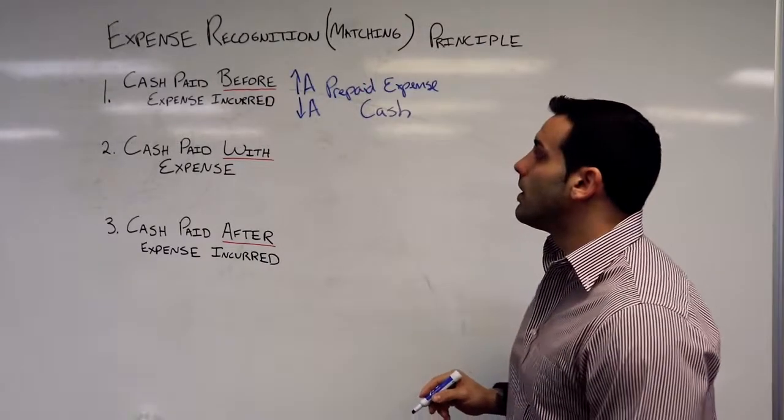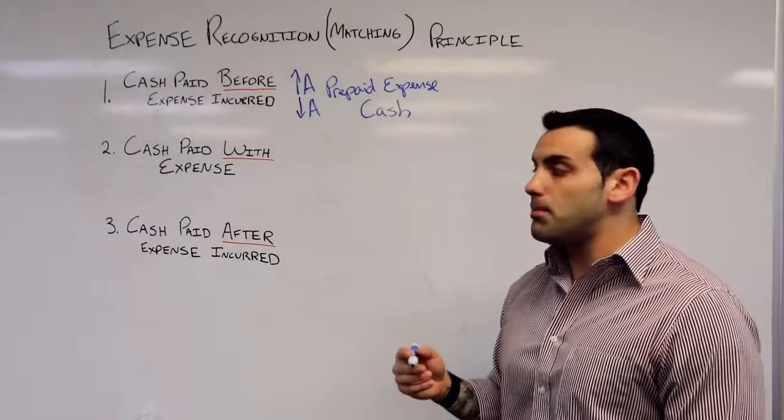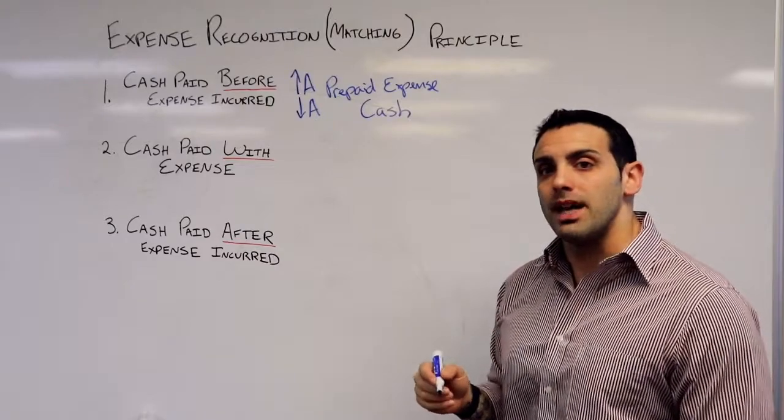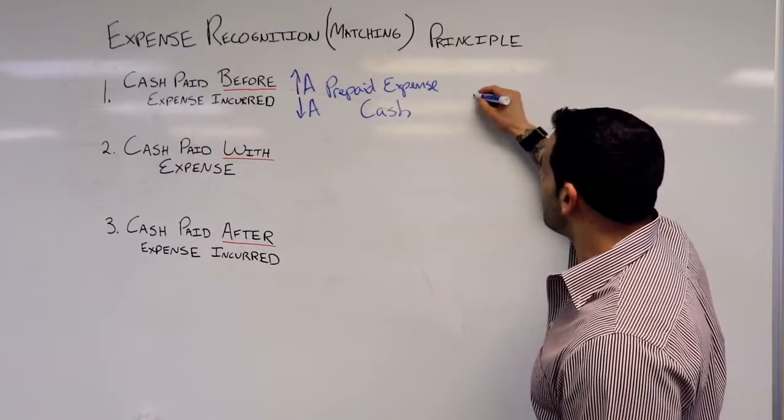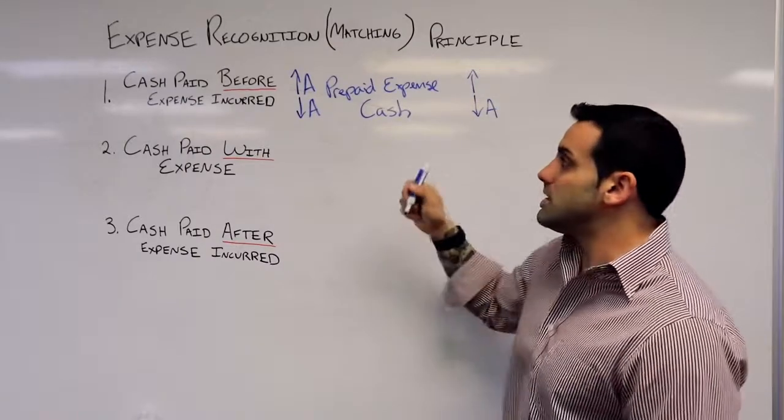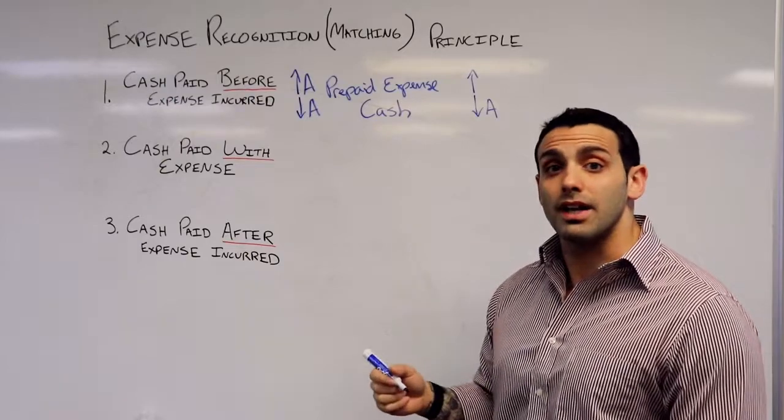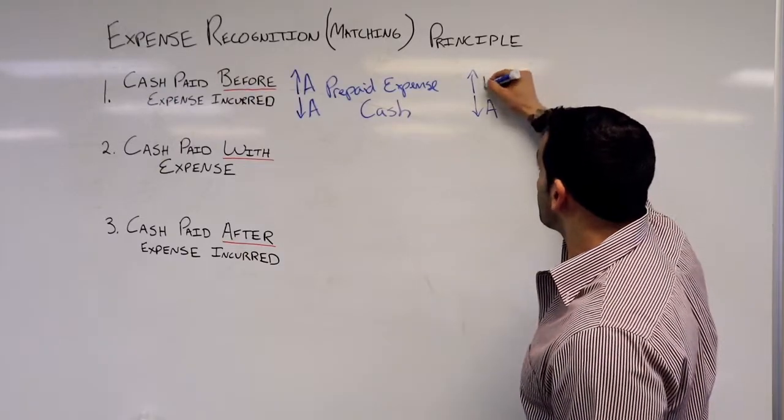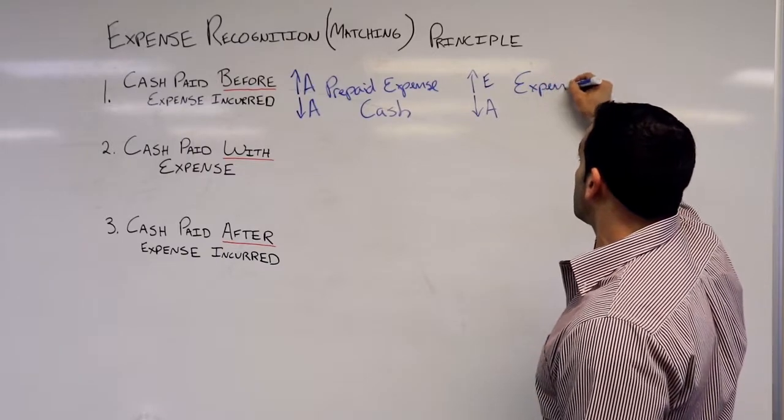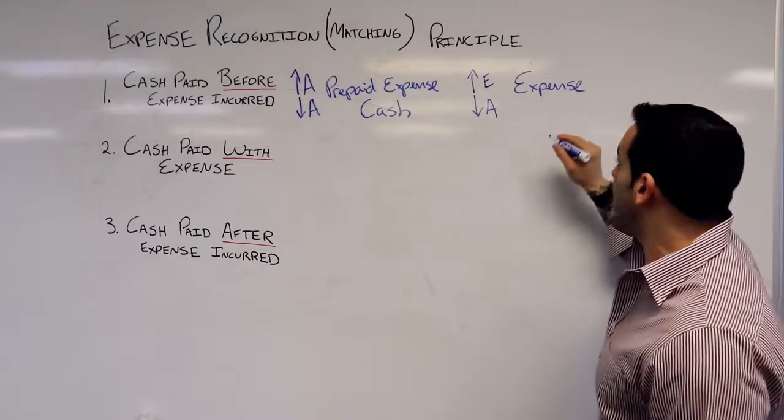When the expense is incurred, since we already paid the cash, we're going to kill the prepaid expense with a credit. And finally, since the expense was actually incurred, we can recognize that expense. So we're going to debit the expense, and we're going to credit or kill the prepaid asset.